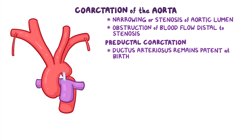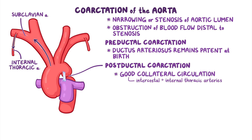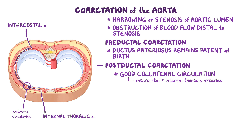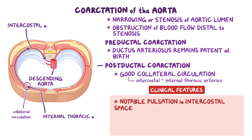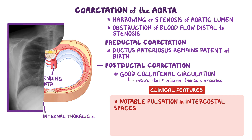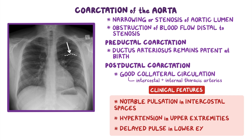When the coarctation is inferior to the ligamentum arteriosum, called post-ductal coarctation, good collateral circulation develops between the proximal and distal parts of the aorta through the intercostal and internal thoracic arteries. As the subclavian arteries are proximal to the stenosis, they are not affected, so their internal thoracic artery branch can provide blood to the intercostal arteries, which in turn provide blood to the descending aorta distal to the stenosis. The collateral vessels may become so large that they cause a notable pulsation in the intercostal spaces and erode the adjacent surfaces of the ribs, called rib notching, which is visible on a chest x-ray. Other clinical signs may include hypertension in the upper extremities and a weak and delayed pulse in the lower extremities.